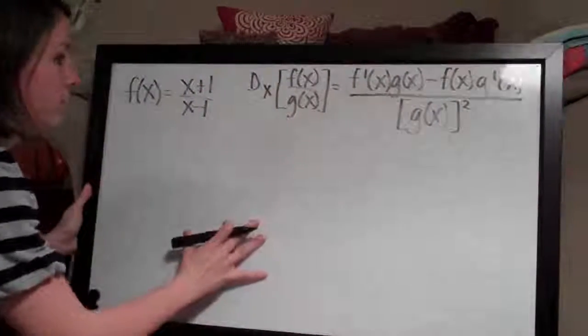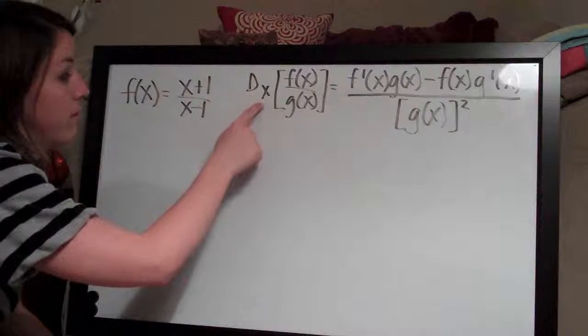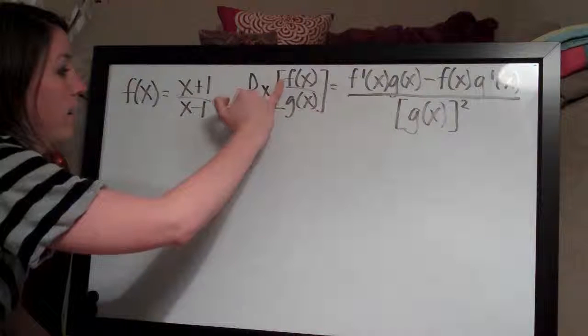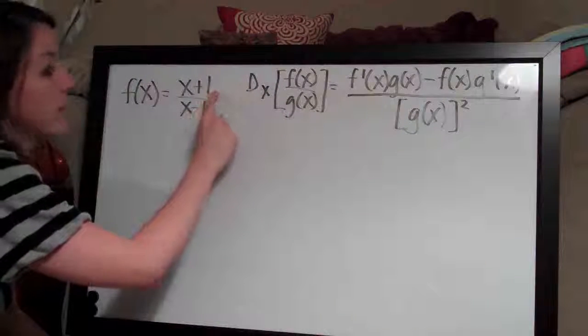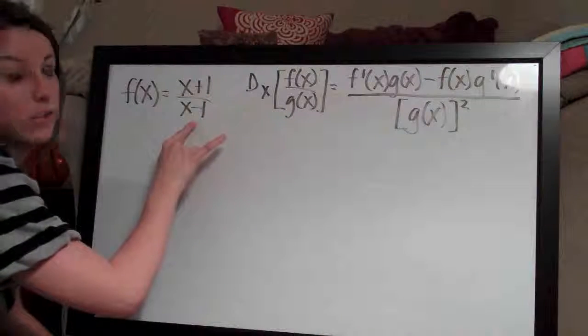Okay, so this is the quotient rule and all it means is that we're taking the derivative, that's what the d stands for, of a function with f of x on the top, g of x on the bottom. So in our case, f of x is x plus 1 and g of x is x minus 1.